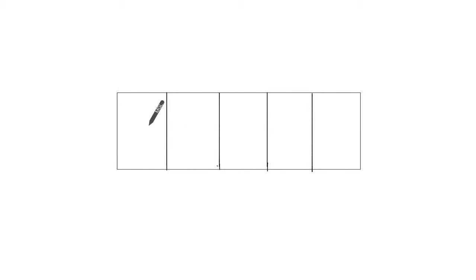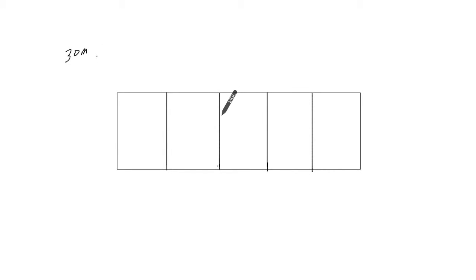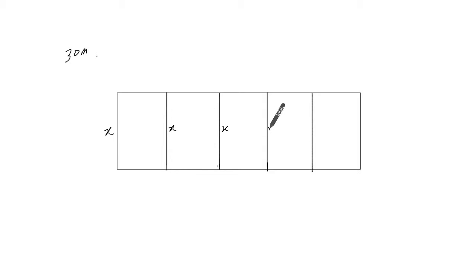We want to build five pens that hold pigs and we have a total of 30 meters of fencing. Determine the dimensions of the enclosure that will give the pigs the largest possible area. So if I call this X, these will all be X then. Let's call this Y.